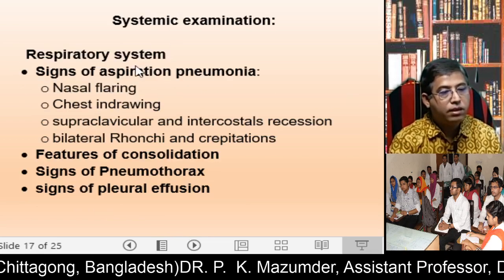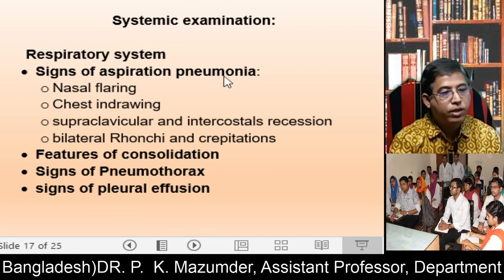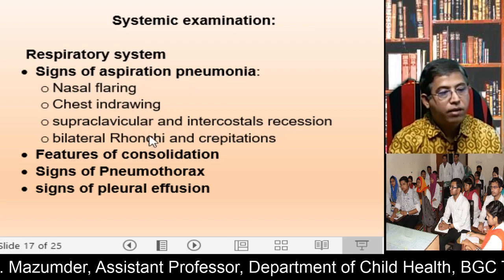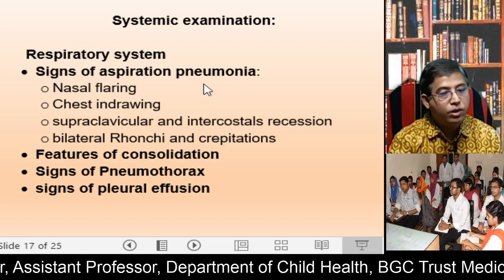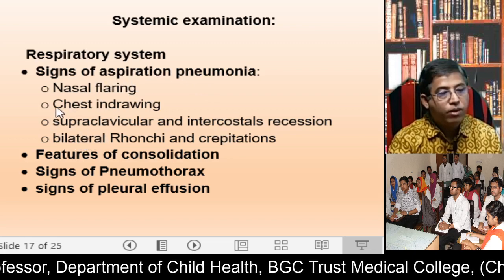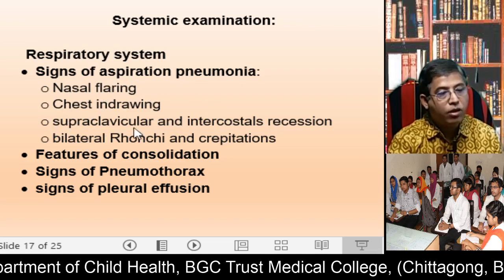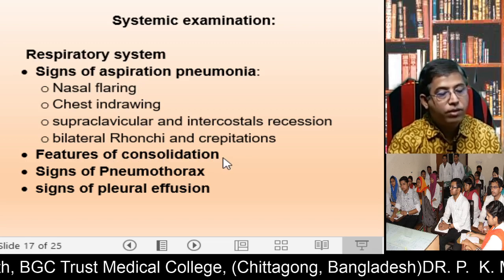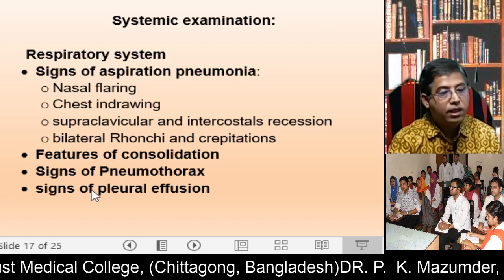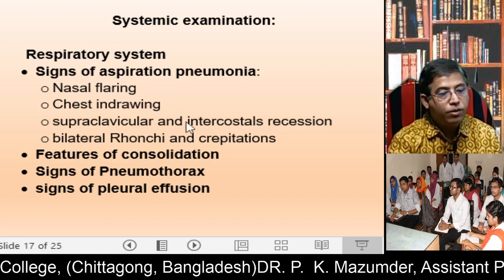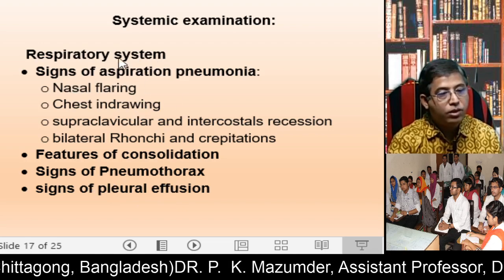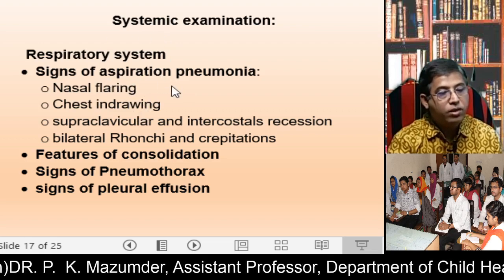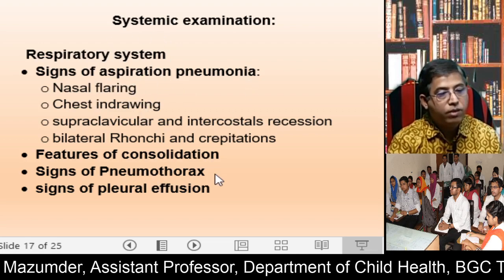On systemic examination, signs of aspiration pneumonia include nasal flaring, chest indrawing, supraclavicular and intercostal recession, and bilateral rhonchi and crepitations. You may also find areas of consolidation with bronchial breath sounds, signs of pneumothorax, and signs of pleural effusion. These are the key lung complications due to kerosene poisoning.